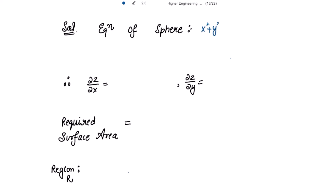The equation of the sphere is x² + y² + z² = 16. I need ∂z/∂x and ∂z/∂y for the surface area formula. Differentiating with respect to x: 2x + 2z(∂z/∂x) = 0, so ∂z/∂x = −x/z. Similarly, ∂z/∂y = −y/z.